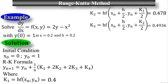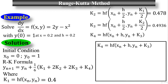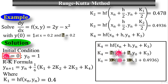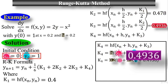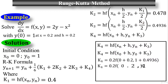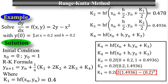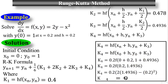Now for the fourth and final stage, k₄. The formula is h times f(x_n + h, y_n + k₃). Substituting where h = 0.2, x₀ = 0, y₀ = 1, and k₃ = 0.4936: this equals 0.2 times f(0.2, 1.4936), which equals 2y minus x squared where y = 1.4936 and x = 0.2. The final value for k₄ is 0.589, the approximate value for the last stage.